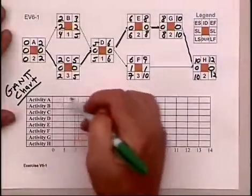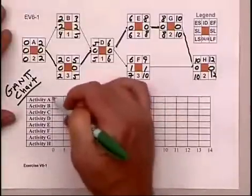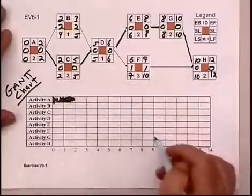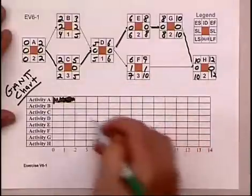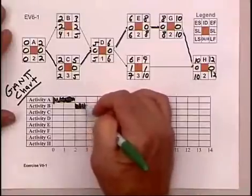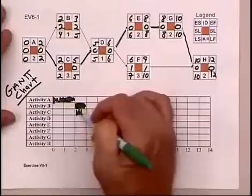We look up here and see activity A is the first activity. It starts at zero and has a duration of two, so we mark it in. Then B can start, which has a duration of one, and C can start. Notice how the bars are representing the time frame given this timeline.